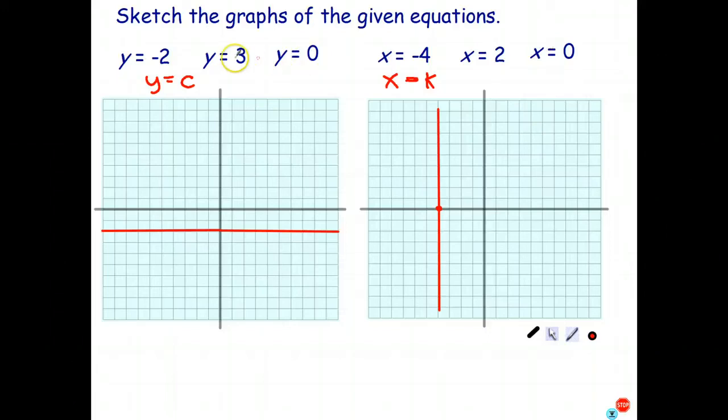Let's go ahead and finish this off. So y equals 3. Again, two-step process. Find the y-intercept of 3, and draw the horizontal line that passes through that point. Find y-intercept of 0. Well, that's going to be right at the origin. And once again, draw the horizontal line that passes through that. So the line with equation y equals 0 turns out to just be the x-axis.